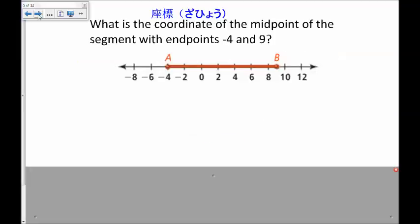So, here is an example. What is the coordinate of the midpoint of a segment with endpoints negative 4 and 9? Well, the midpoint is the average. It is negative 4 plus 9 divided by 2.